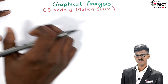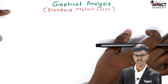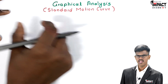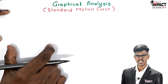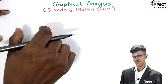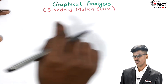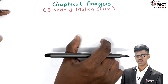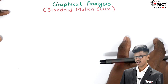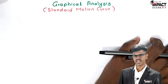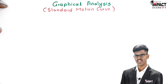Before that, we study some important points. In motion curves, slope is the main factor. If we know the position-time curve and find out the slope on that curve, we get velocity. If we know the velocity-time curve and find out the slope on that curve, we get acceleration. So slope is the main factor. Regarding slope, we consider some specific cases.